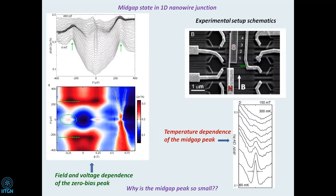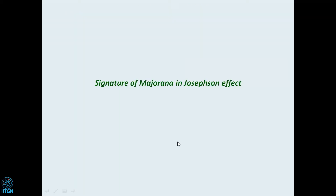We did see signatures of this peak as we increase the magnetic field in the experimental geometry. However, there is still an issue: suppose I have a superconducting nanowire — there is a chance that peaks in the middle of the gap appear because of disorder, because there could be additional states from other sources. What we really need to confirm this observation is a phase coherent signature of Majorana fermions.